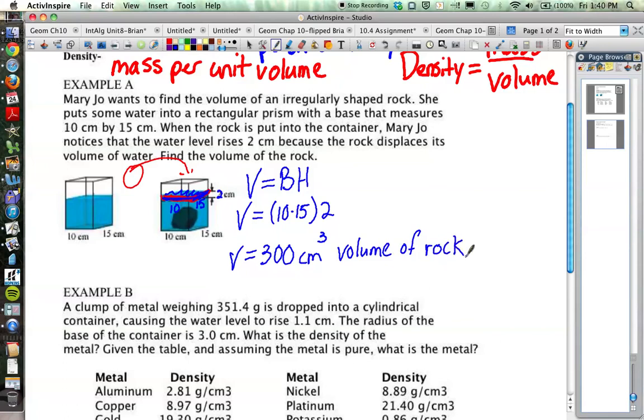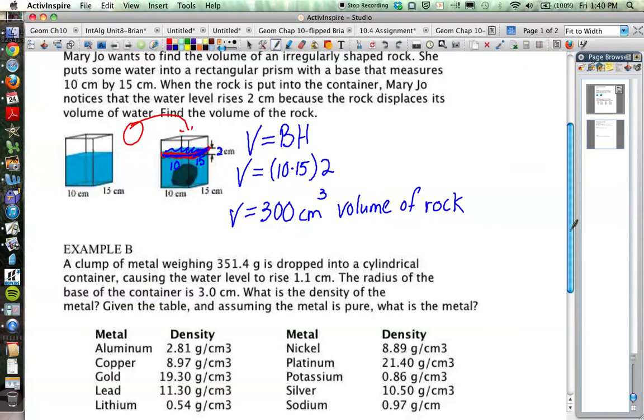That's a nice easy calculation we can make without actually having to measure around the rock. We just measure the amount of water displaced in a rectangular prism container. So that's nice and easy.